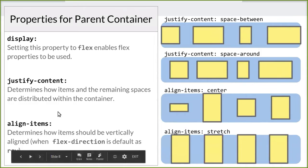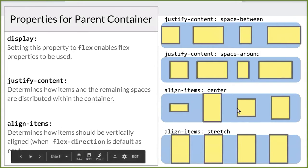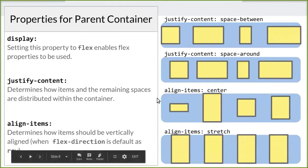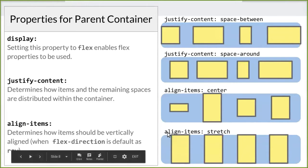The align-items property allows us to determine how items should be vertically aligned — that's true when flex-direction is row. I'm just going to show you that align-items can be specified as center, flex-start (all elements start at the top of the parent container), flex-end (they end at the bottom), or stretch — when set to stretch, the items fill up the entire height of the parent container.